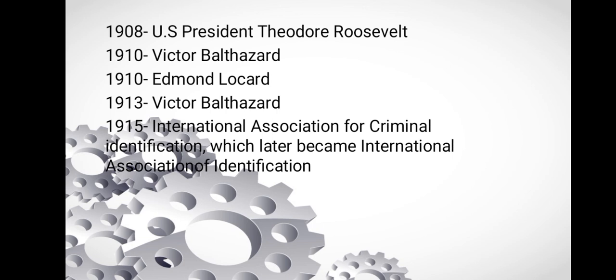In 1910, Edmund Locard, successor to Lacassagne as professor of forensic medicine at the University of Lyon, France, establishes the first police crime laboratory. In 1913, Victor Balthazard, professor of forensic medicine at the Sorbonne, publishes the first article on individualizing bullet markings. In 1915, International Association of Criminal Identification, which later became the International Association of Identification (IAI), is organized in Oakland, California.